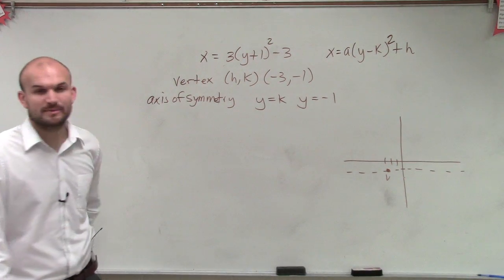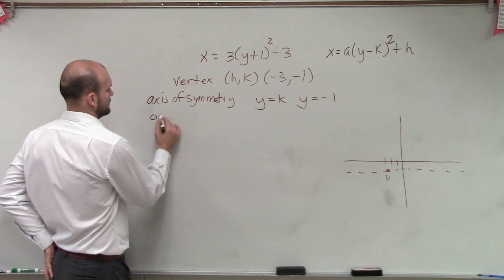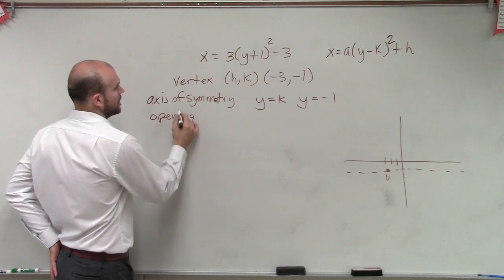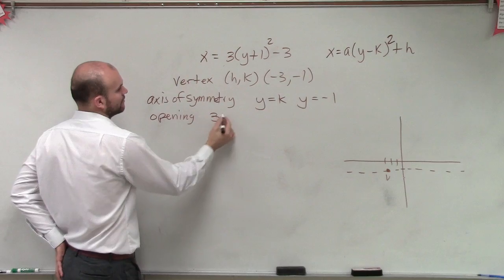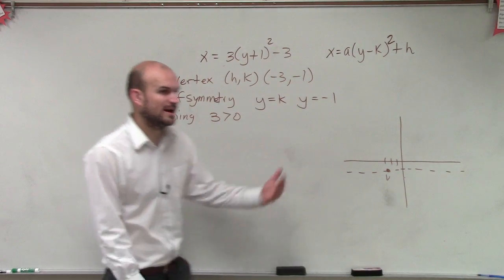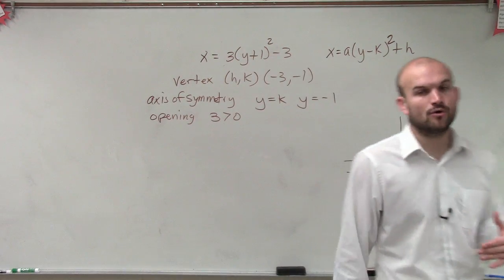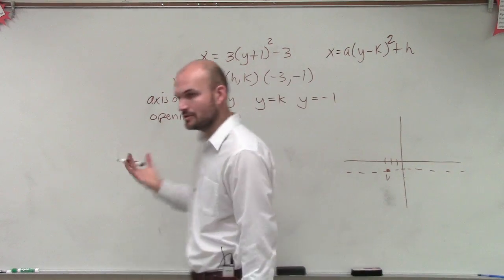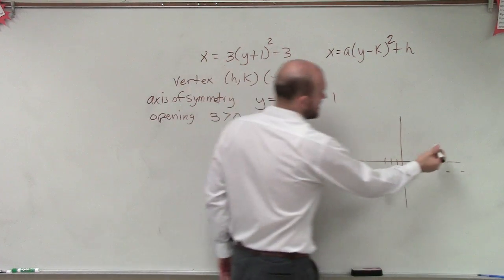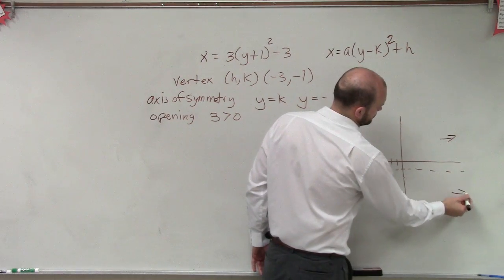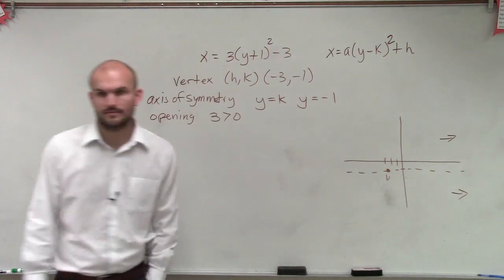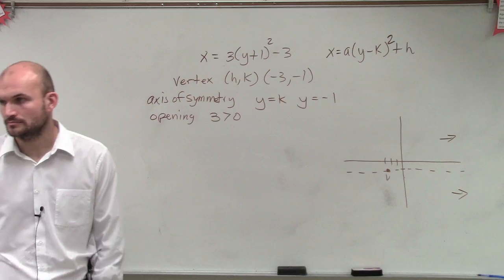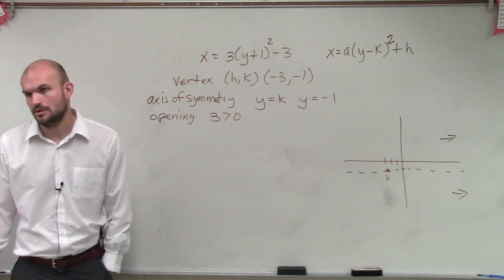Now, what we need to do is determine the opening. So we look at our a, which is 3, which is greater than 0. So when we have an opening that's positive for a horizontal parabola, does it open to the right or to the left? To the right. To the right. So now my graph, I know my graph opens to the right.